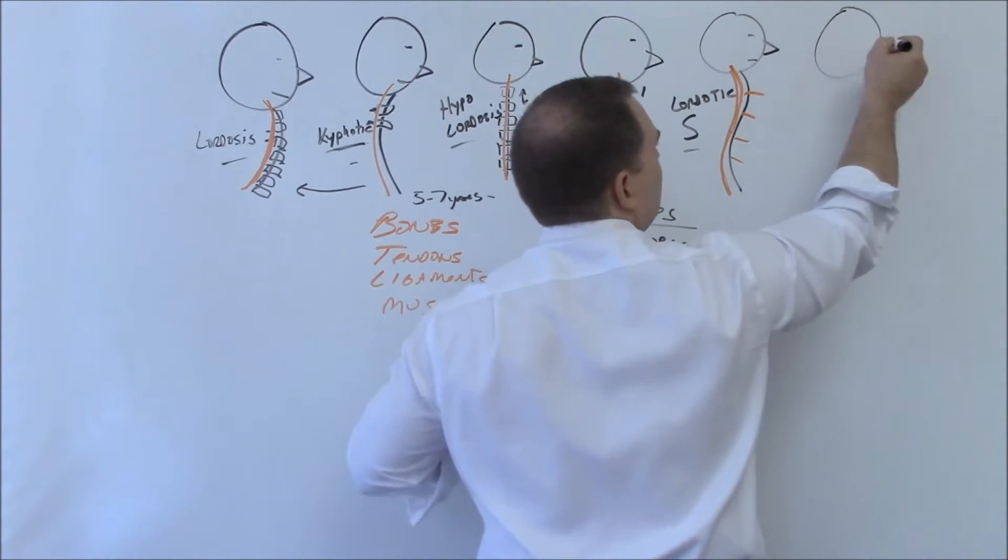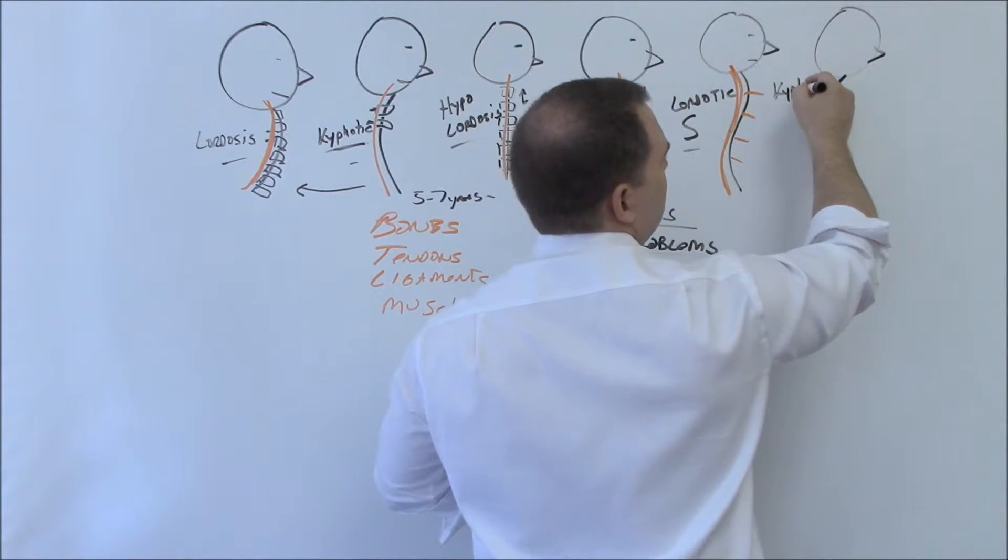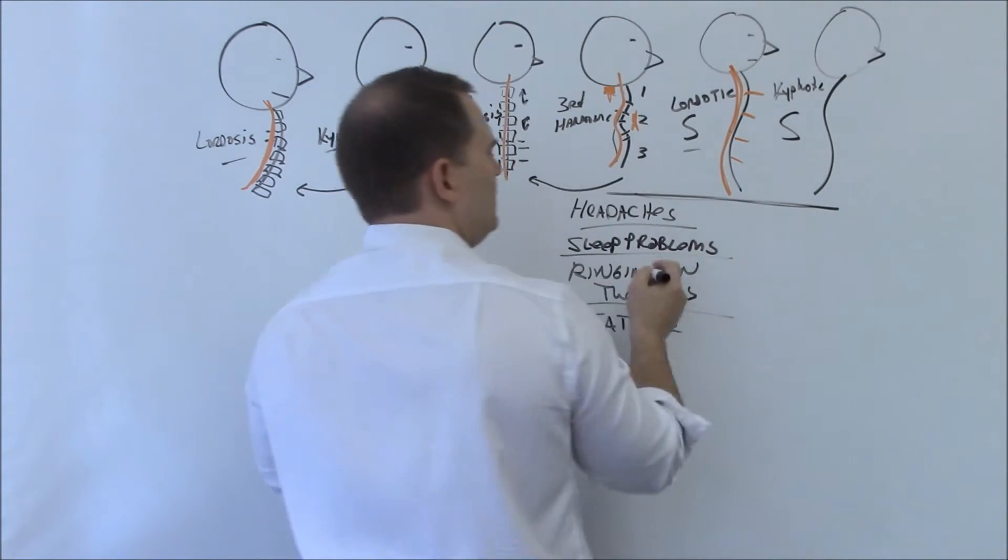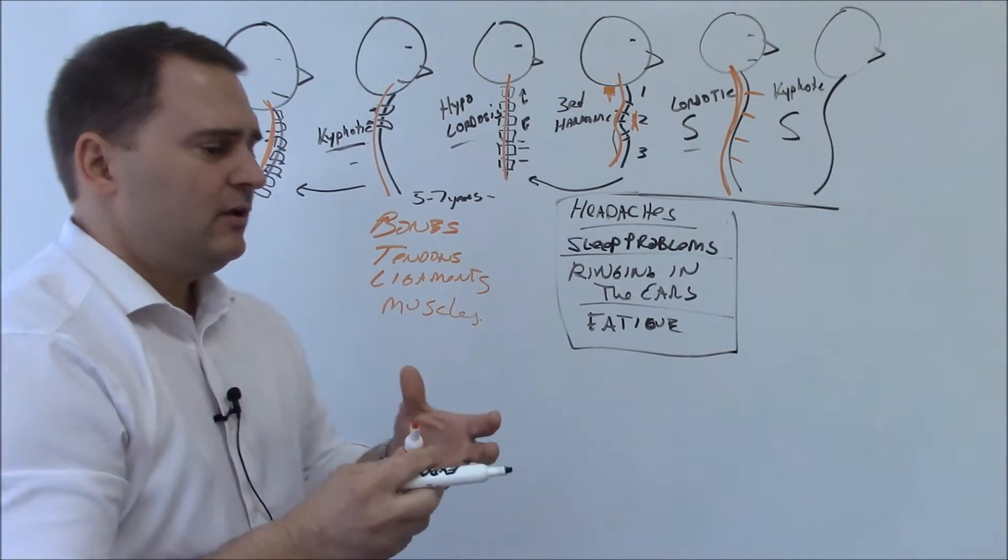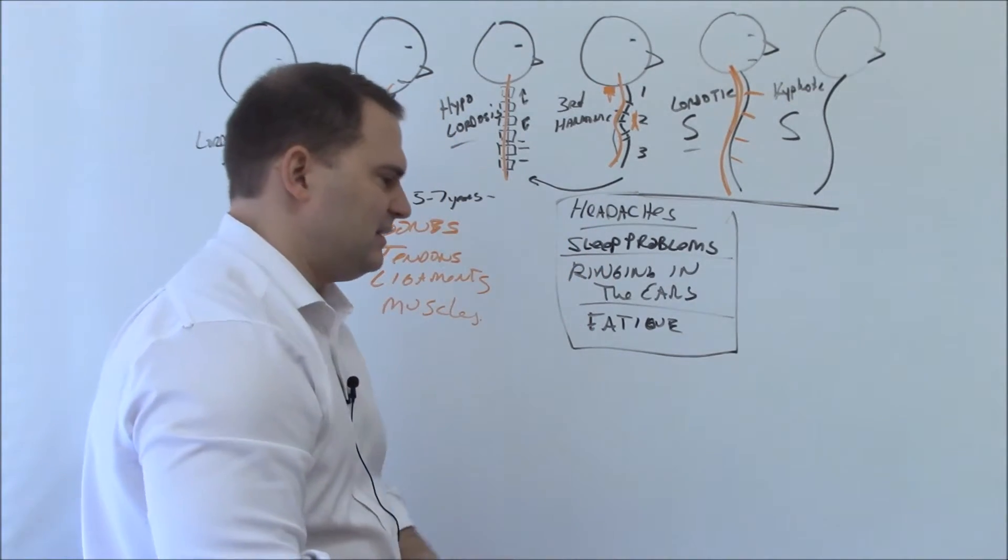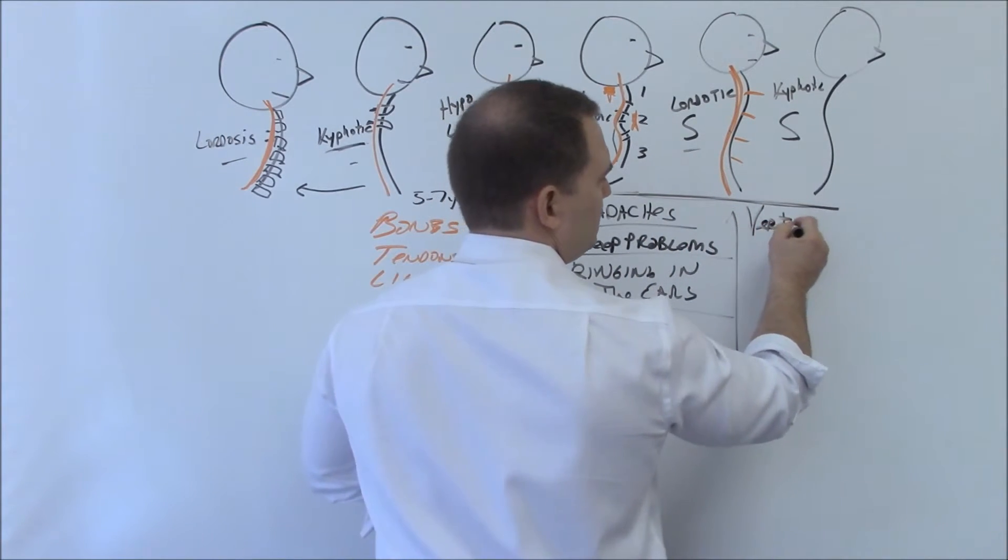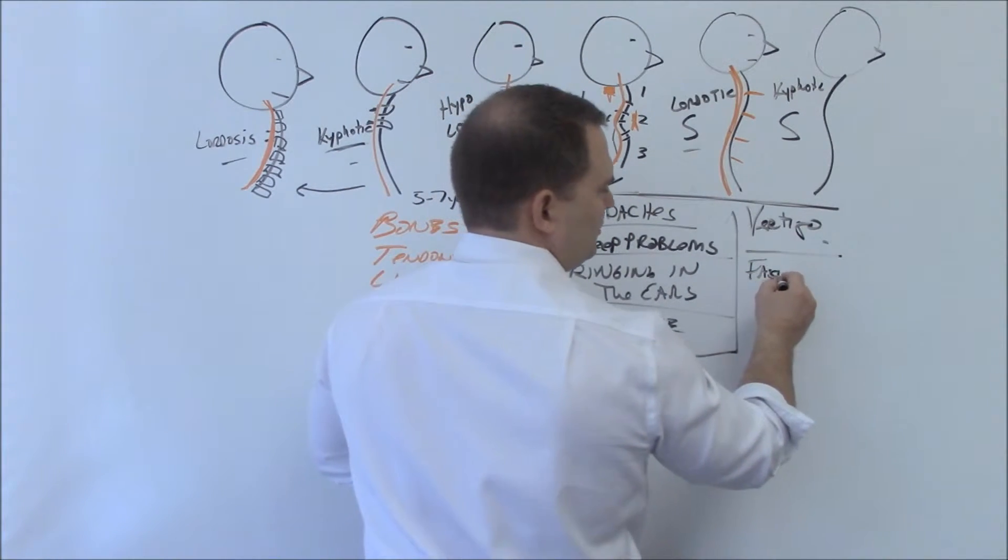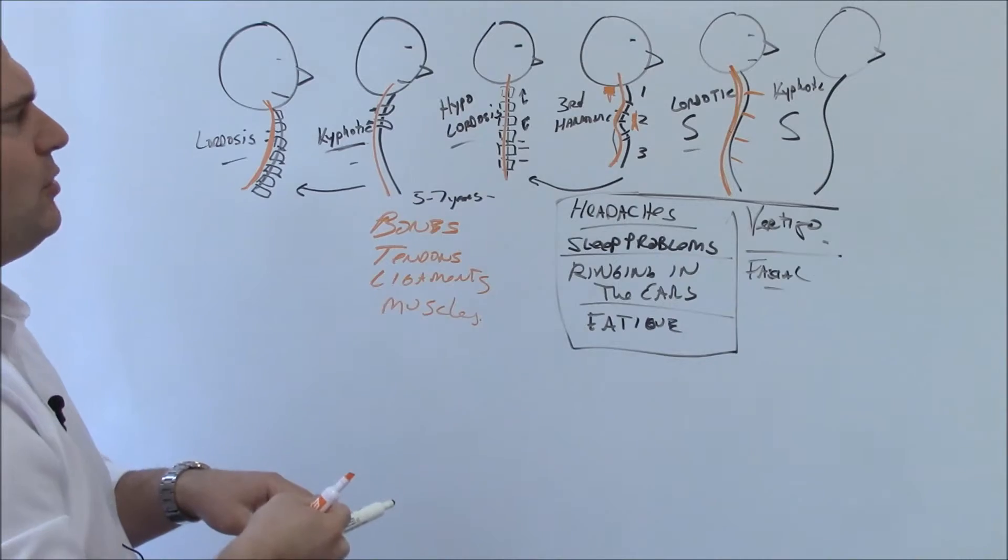The last and worst is called a kyphotic S. These three cause headaches, sleep problems, ringing in the ears, and fatigue. They may not have enormous neck pain, but they almost always have headaches. Sometimes they'll also present with things like vertigo and facial stuff. We're looking at nervous system components primarily.